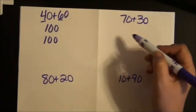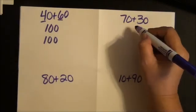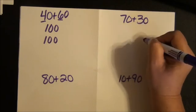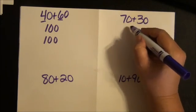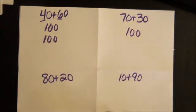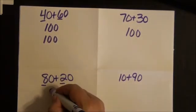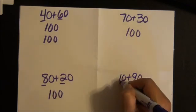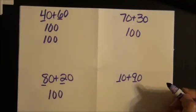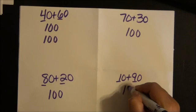Same thing over here. 7 plus 3 is 10, and then you add the 0 at the end, that's 100. 70 plus 30 is 100. 8 plus 2 is 10, so 80 plus 20 is 100. 1 plus 9 is 10, so 10 plus 90 is 100.